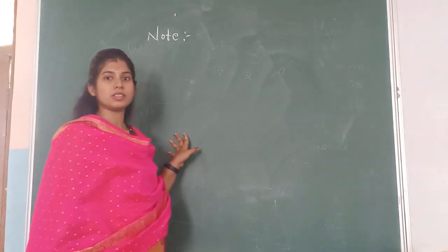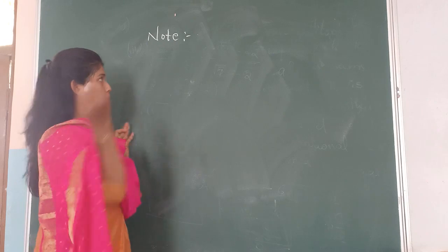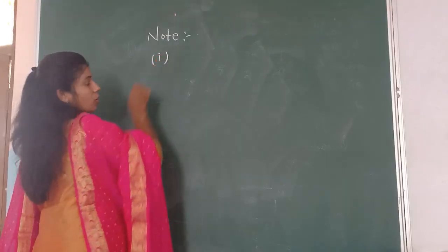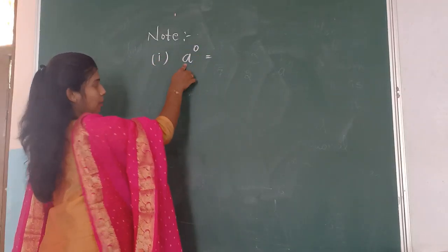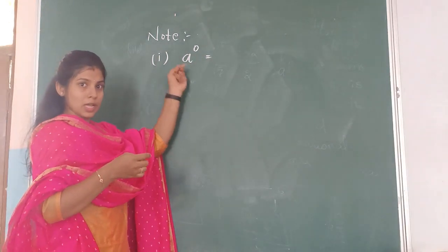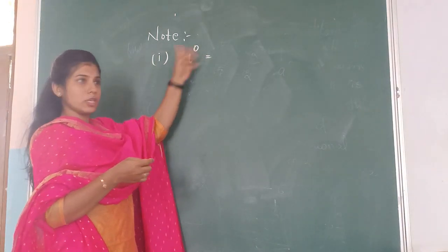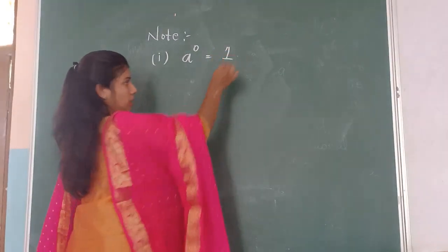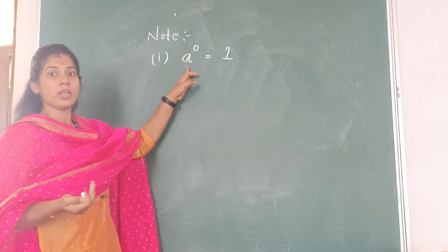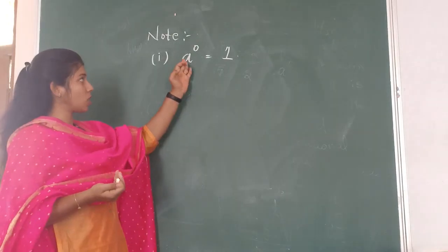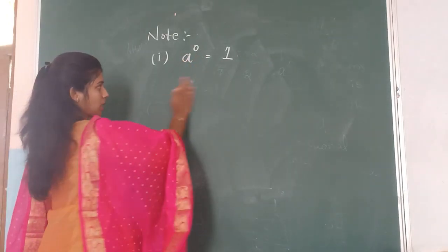Before going to the exercise problems, let us note some important points. The first note: anything to the power of 0 is always 1. Taking A as the base, A to the power of 0 is always 1. Instead of A, you can take any number or any variable — anything to the power of 0 is always 1.